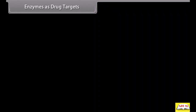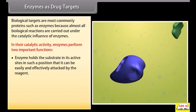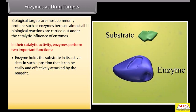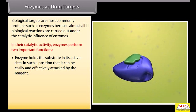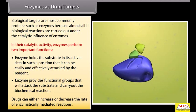Biological targets are most commonly proteins such as enzymes, because almost all biological reactions are carried out under the catalytic influence of enzymes. In their catalytic activity, enzymes perform two important functions: they hold the substrate at their active sites in a position that can be easily attacked by the reagent, and they provide functional groups that attack the substrate and carry out the biochemical reaction. Drugs can either increase or decrease the rate of enzymatically mediated reactions.